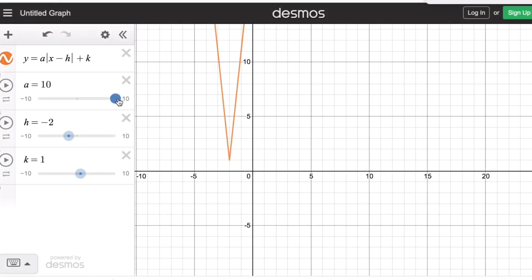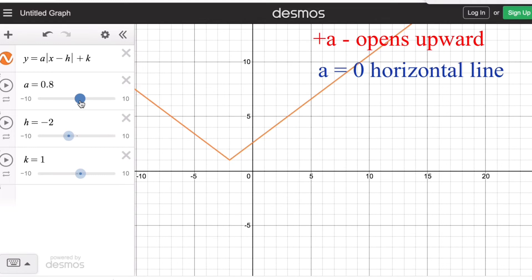We remember that if a is positive, the graph opens upward. If a becomes zero, the graph becomes a straight horizontal line.